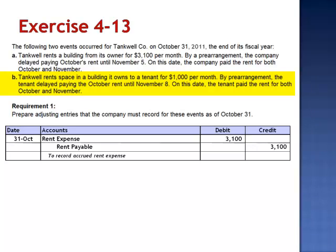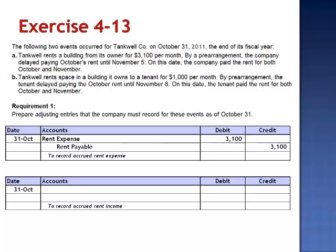Letter B states that Tankwell rents space in a building it owns to a tenant for $1,000 per month. By prearrangement, the tenant delayed paying the October rent until November 8. On this date, the tenant paid the rent for both October and November. So it looks like everybody's behind on their rent. On October 31, to accrue the rental income, debit rent receivable $1,000 and credit rent earned.